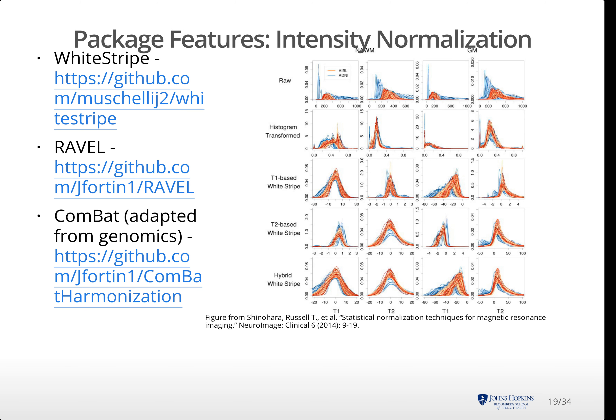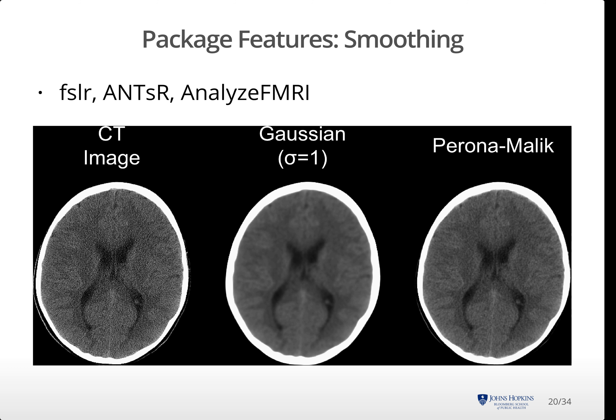As MRI have arbitrary units, the intensities must be normalized across people. This is especially important for data from multiple sites or multiple scanners. Here we display the intensity distributions for normal appearing white matter and gray matter for two different data sets using the WhiteStripe method — we see better consistencies in white matter after normalization. Additional methods such as RAVEL and ComBat can be used to harmonize data. 3D smoothing can be done using ANTSR, FSLR, and analyzeFMRI. Non-isotropic smoothing such as the Perona-Malik smoother can be done in ANTSR. Here we display a non-contrast CT scan with different smoothing.